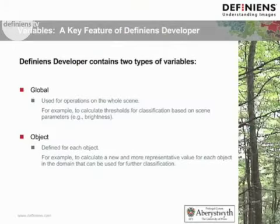An e-conditioned developer contains two types of variables. The first of these being global variables, and these are used for whole scene operations — for example, calculating a threshold for classification based on scene parameters, like Gregor showed.